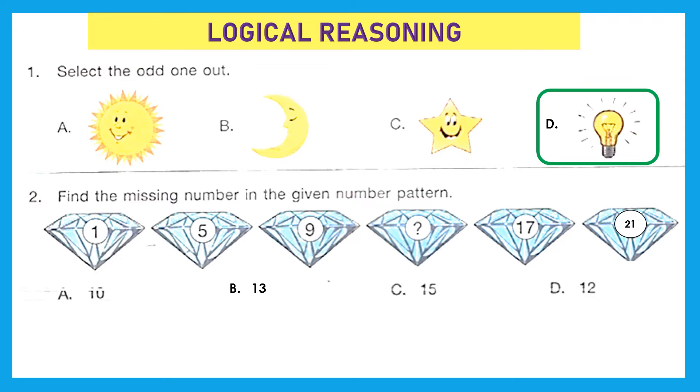Question 2: Find the missing number in the given number pattern. Let's see the pattern. First is 1, and the second diamond is 5, that is 1 plus 4 equals 5. Then third one is 9, so 5 plus 4 equals 9. In each diamond we are adding plus 4. Let's follow the same pattern: 9 plus 4 equals 13. So here the missing number is 13. Let's complete the pattern to understand whether we are right or wrong. Plus 4 is 17, 17 plus 4 is 21. So we are absolutely right. Our answer is option B, 13.